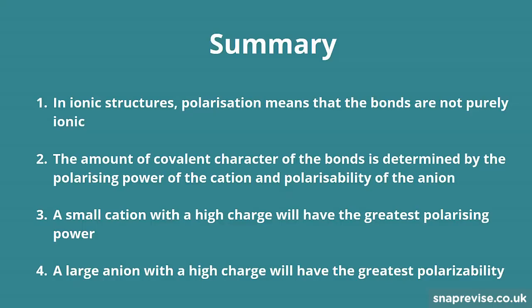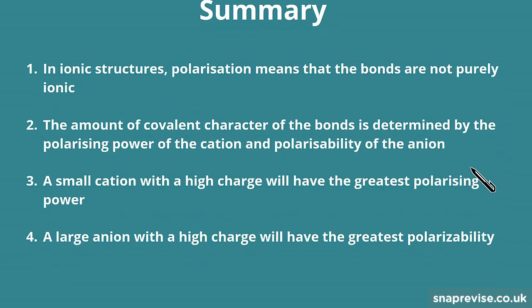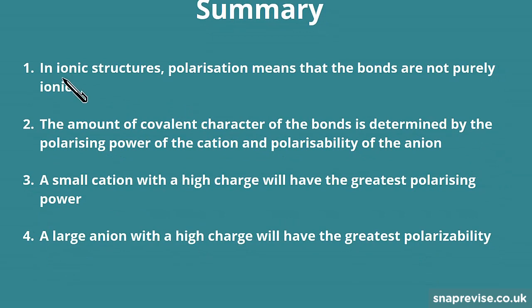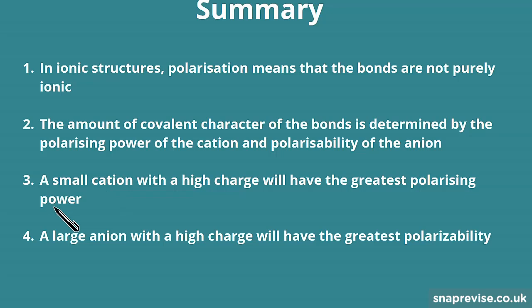That's all for this video, guys. So let's summarise what we've learnt. In ionic structures, polarisation means that bonds are not purely ionic — they have some covalent character. The covalent character of the bonds is determined by the polarising power of the cation and the polarisability of the anion. A small cation with a high charge will have the greatest polarising power, and a large anion with a high charge will have the greatest polarisability.